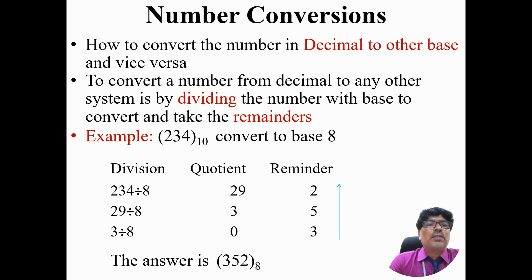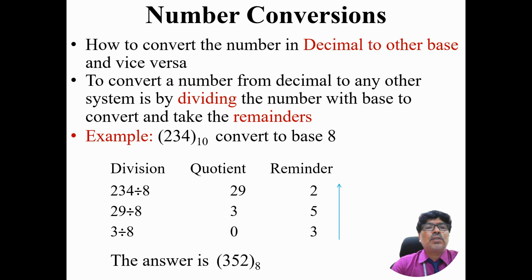Let's take one example: convert 234 base 10, a decimal number, into base 8. This process uses dividing the number by the base to which you want to convert and taking the remainders. Take the number 234, divide it by 8 — the quotient is 29 and the remainder is 2. Again take quotient 29, divide by 8 — quotient is 3 and remainder is 5. Take that quotient, divide by 8 — the quotient is 0 and remainder is 3. This division process continues until the quotient is 0.